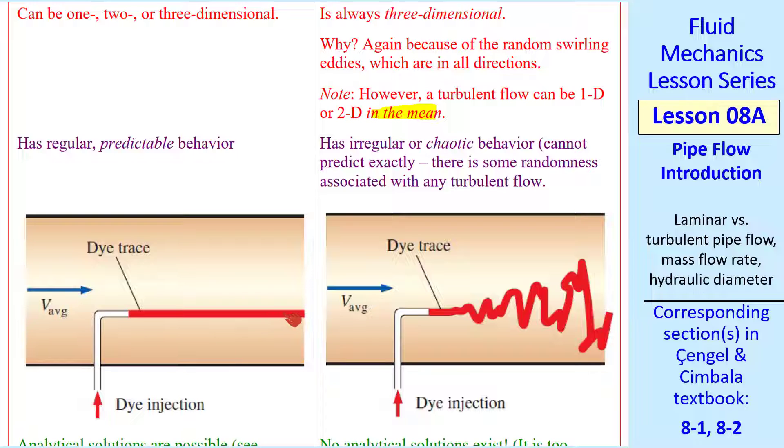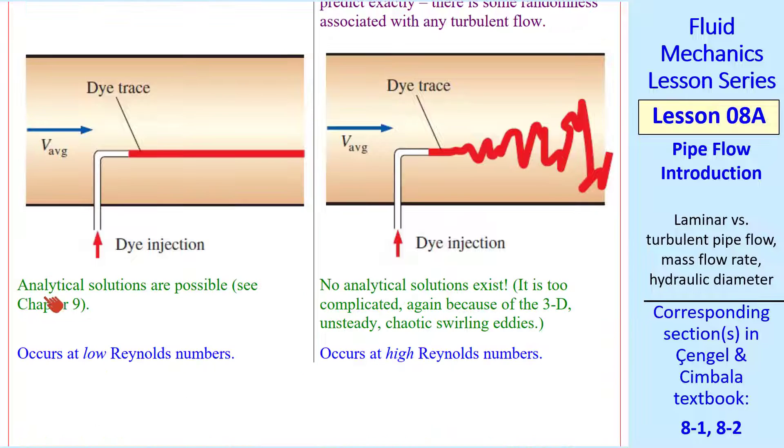Laminar flow has regular, predictable behavior. For example, when you inject dye, you get a nice streak line that's straight. Turbulent flow has irregular or chaotic behavior, which cannot be predicted. There's always randomness. If you inject dye into a turbulent pipe flow, you'll get all kind of random motion of the streak line.